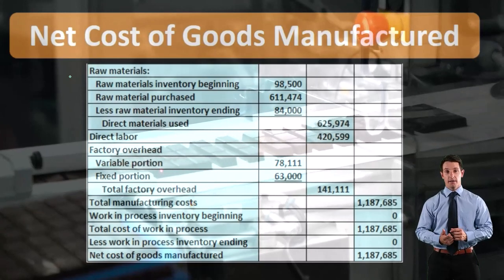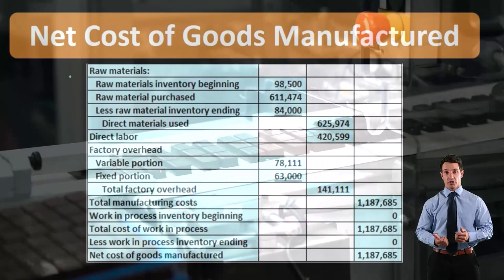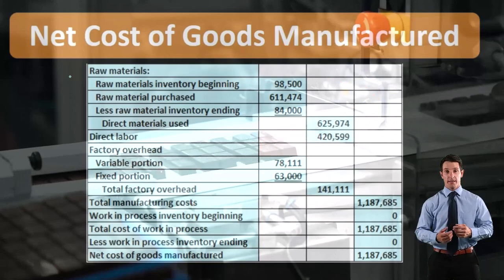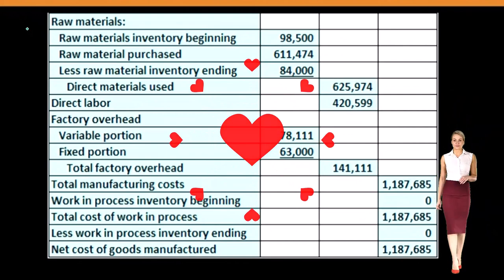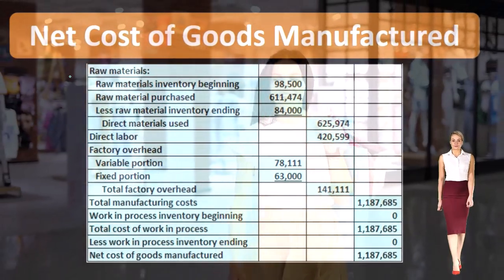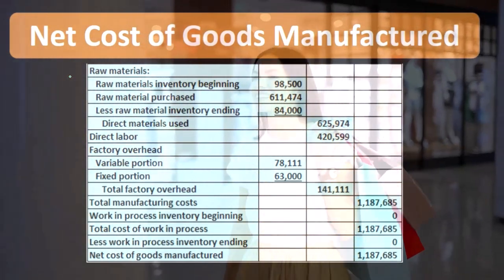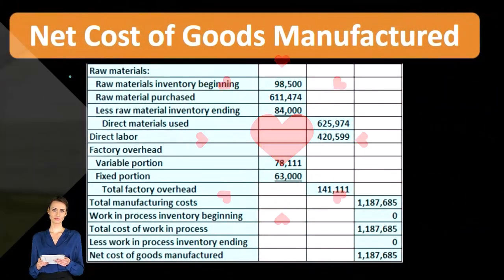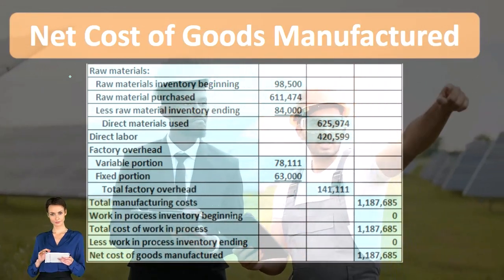When measuring the value of that inventory, we need to include not just the raw materials, but the direct labor and the factory overhead — the conversion costs, the things needed to transpose raw material into the ending inventory. Part of the value of that inventory will include not just the materials, but the direct labor and the factory overhead. If we are in the production process, we will have to track those as we go.